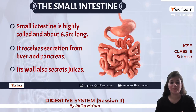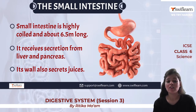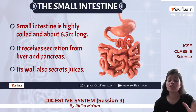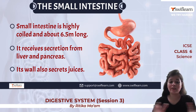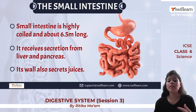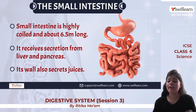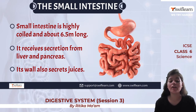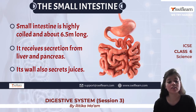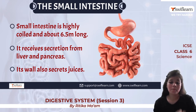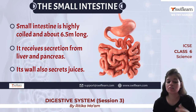The small intestine, despite its name, is not small at all — it is about 6.5 meters long. It is highly coiled within the body. The small intestine receives secretions from the liver and pancreas, and its walls also secrete various digestive juices.